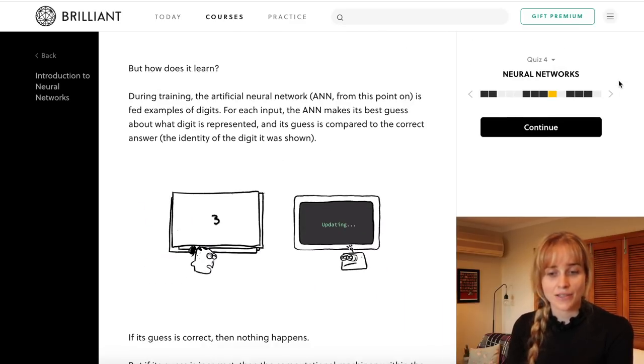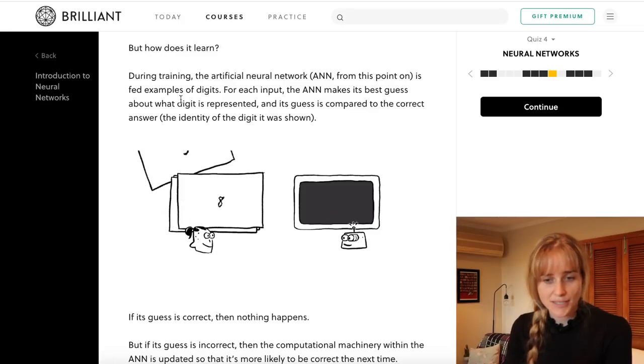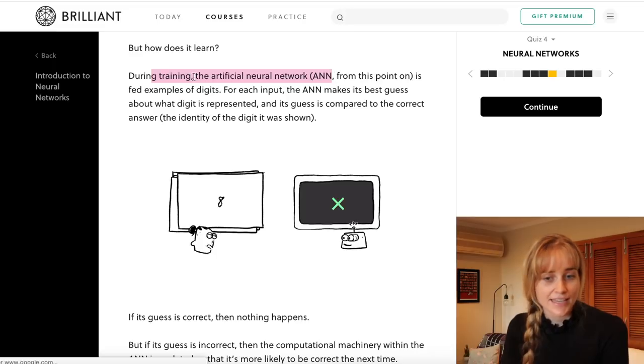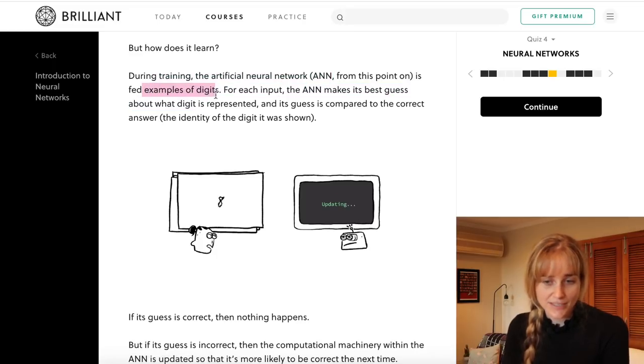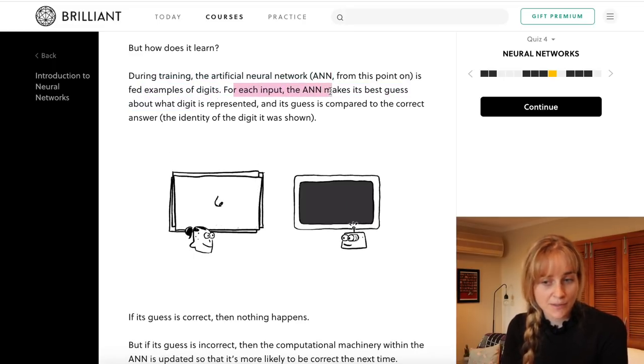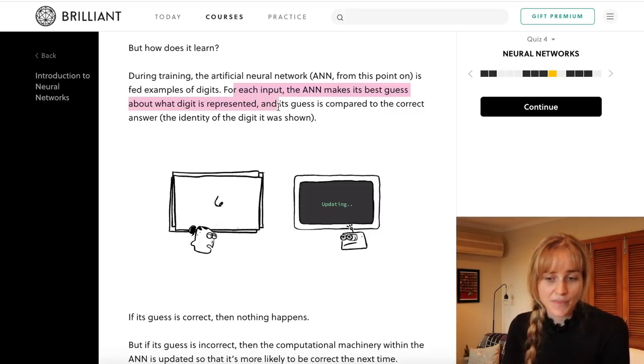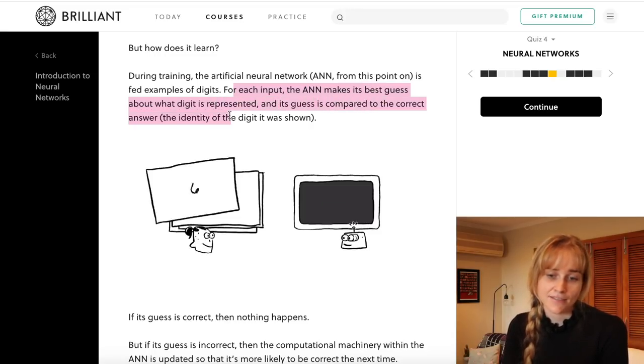Just as a high level look at how it learns before we take a look at the code, it says that during training an artificial neural network is fed examples of digits. For each input the neural network makes its best guess about what digit is presented and its guess is compared to the correct answer.